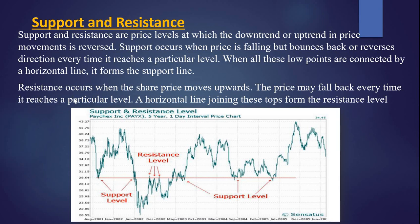Next is resistance. Resistance occurs when the share price moves upward, but the price may fall back every time it reaches a particular level. The horizontal line joining these points is known as the resistance level. Here you can see the price going upward multiple times but immediately it starts falling — up, fall, up, fall, like that. At this level there is resistance, and these levels are known as support and resistance levels.